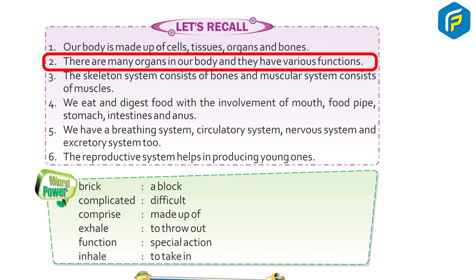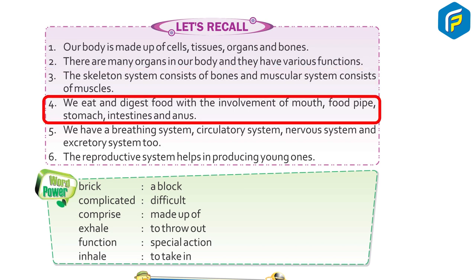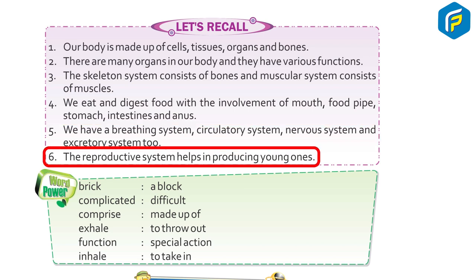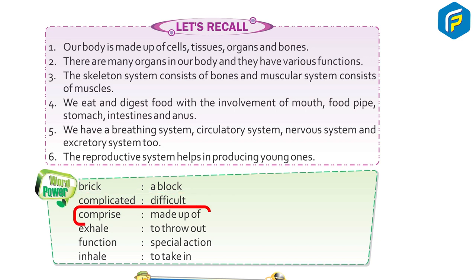Let's recall: Our body is made up of cells, tissues, organs, and organ systems. Organs have various functions. The skeletal system consists of bones and the muscular system consists of muscles. We eat and digest food with the mouth, food pipe, stomach, and intestine. We also have a breathing system, circulatory system, nervous system, and excretory system. The reproductive system helps produce young ones.